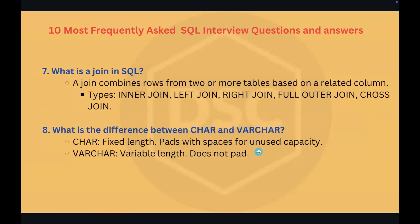Question number eight: what is the difference between CHAR and VARCHAR? CHAR is a fixed-length data type that stores a predefined number of characters. Unused space is padded with blanks — for example, CHAR(5) always stores 5 characters, even for shorter inputs. VARCHAR is a variable-length data type that stores only the actual input length up to a defined limit — for example, VARCHAR(5) stores exactly what is input, up to 5 characters, without padding.